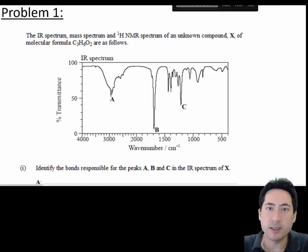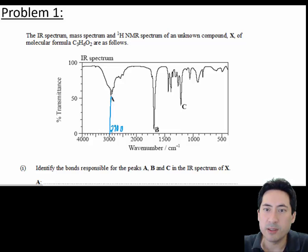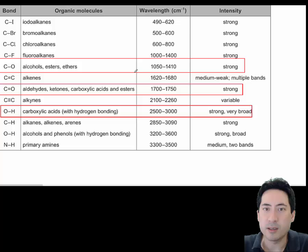Problem one now, we're just going to look at the infrared spectrum here. So the infrared spectrum of an unknown compound X of molecular formula C3H6O2 is as follows. Identify the peaks, the ABC peaks. So we just draw lines down from there and we get 2900, 1700 and 1200. And so we go to the data booklet and we can see the possible choices here.